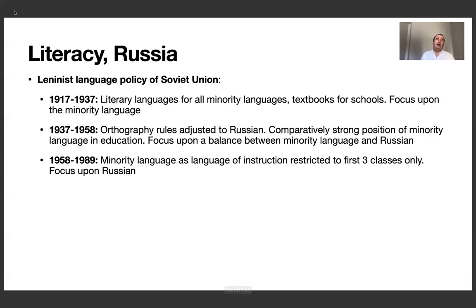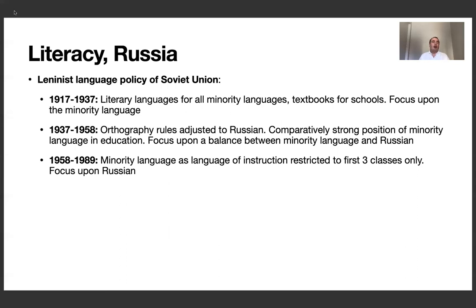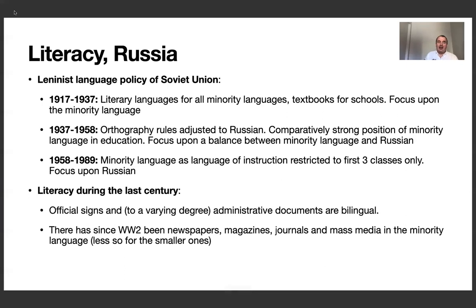Russia, on the other hand, had a Leninist language policy for the Soviet Union after the revolution that created, during the first two decades, written languages for all the minority languages, including textbooks for schools, really with a focus upon the minority language. The two subsequent decades then saw orthography rules adjusted to Russian, still a comparatively strong position of minority languages in education, so that the whole education system for the largest minority languages was conducted in the language itself. There was a balance between the minority language and Russian, and then during the last decades of the Soviet Union, from Khrushchev on, minority languages as language of instruction were restricted to the first three classes only, with more a Russian-language policy. But literacy was actually always in focus — there was official signage, and especially for the larger languages, administrative documents being bilingual.